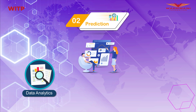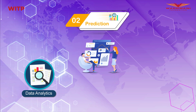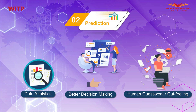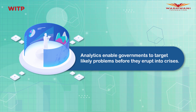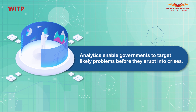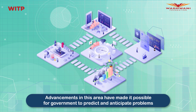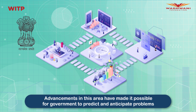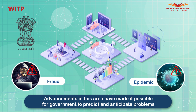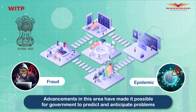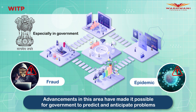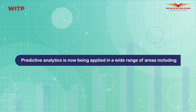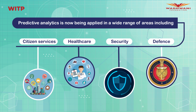Data analytics offers many methods of prediction that provide better accuracy than human guesswork or gut feel. These data-driven approaches help with better decision making. Analytics enables governments to target likely problems before they erupt into a crisis. Recent advancements have made it possible for governments to predict and anticipate problems rather than merely react to them — from spotting fraud to combating an epidemic. An ounce of prevention really is worth a pound of cure, especially in government.